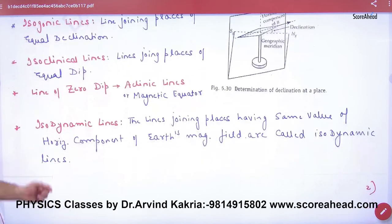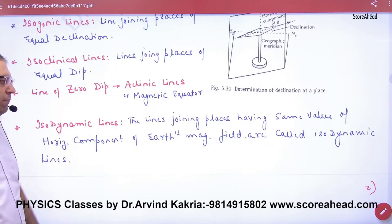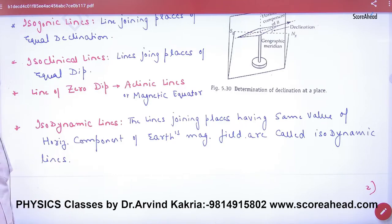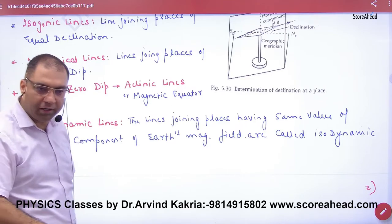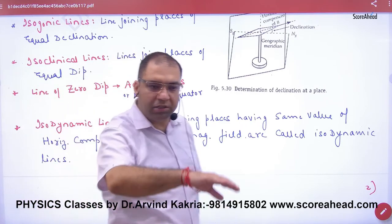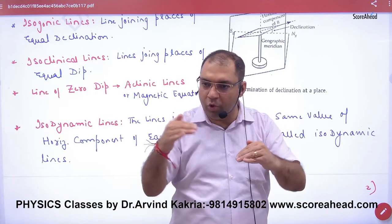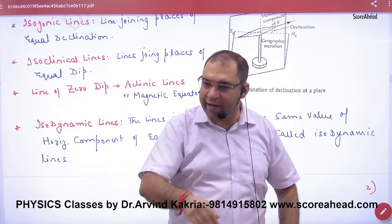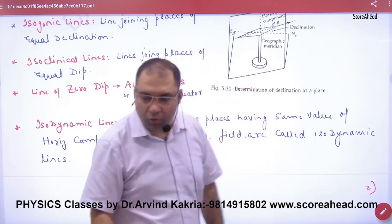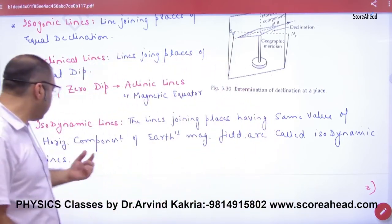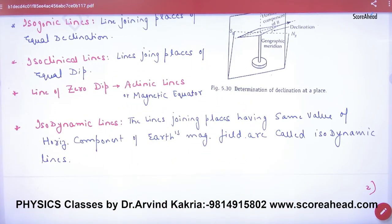In isodynamic lines, these are lines joining places having the same value of horizontal component. Wherever the horizontal component of Earth's field is the same, those locations are connected — these are called isodynamic lines.